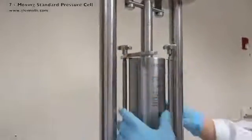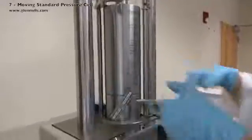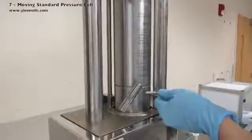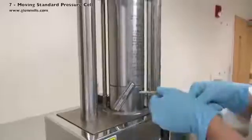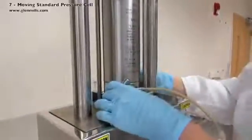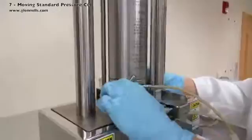Rotate so that the sample outlet tube faces the front in the direction of the collecting beaker. A run of flexible tubing can be added to direct the flow. The flow valve assembly should be to the left side and is clear to turn.